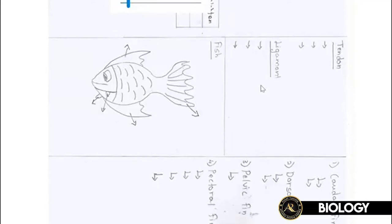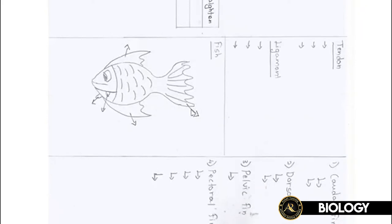We've covered humans — the locomotion and skeletal system of human beings. Now we're going to look into a fish's locomotion and skeletal system. What is actually supporting a fish to move are the fish's fins. The tail — you can call it the tail or caudal fin. The main function of the caudal fin is to flip left and right, which provides forward thrust. This is what allows the fish to swim forward.